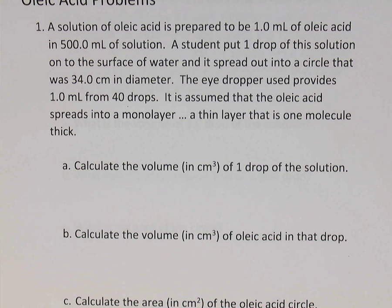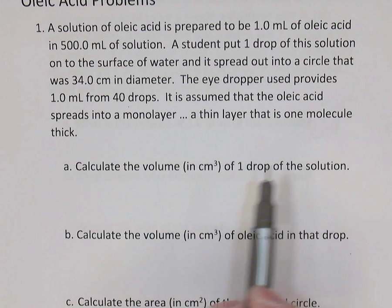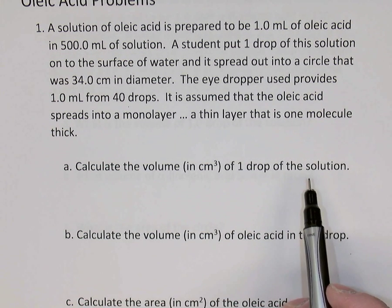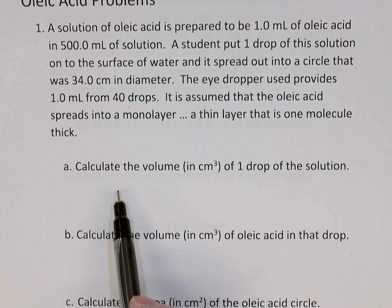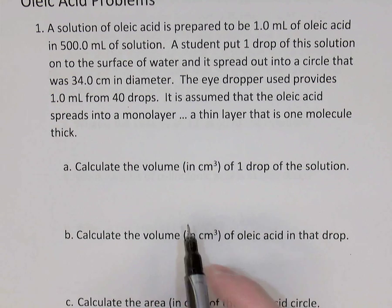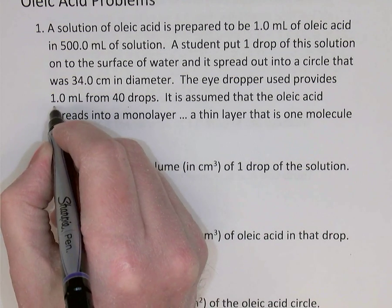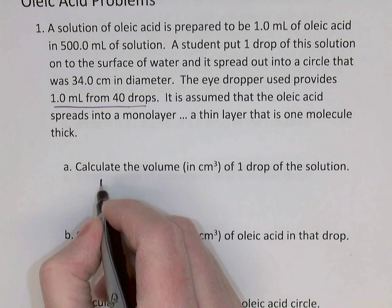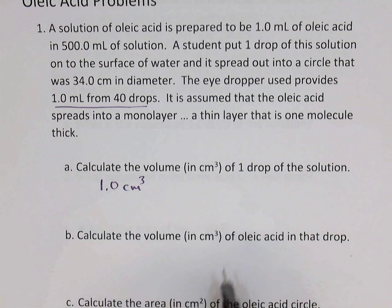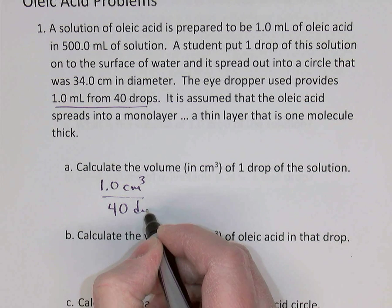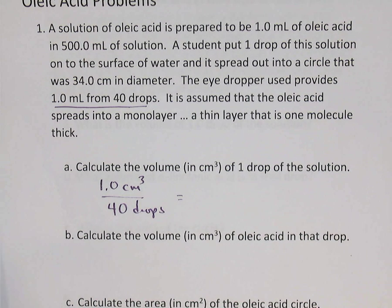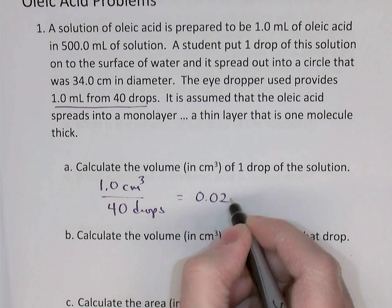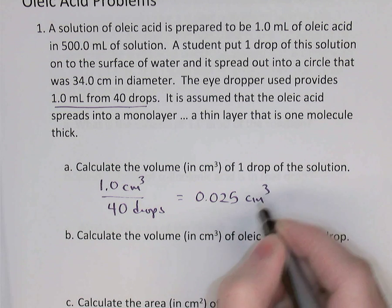Oleic acid has polar and non-polar parts to the molecule. The polar part is attracted to the water; the non-polar part is not, so the oleic acid spreads out on the surface of the water. To calculate the volume in cubic centimeters of one drop of the solution, we use the fact that one milliliter equals 40 drops. So one cubic centimeter divided by 40 drops gives us 0.025 cubic centimeters per drop.